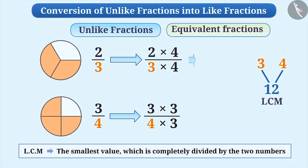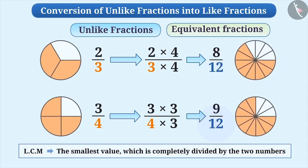Thus, the equivalent fraction of 2 by 3 is 8 by 12 and 3 by 4 is 9 by 12. Since the denominator of both fractions is equal, we say that we have converted 2 by 3 and 3 by 4 into like fractions.